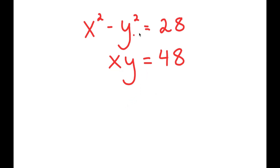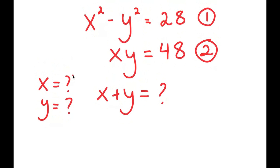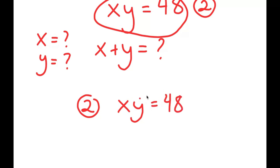Alright, so in this system of equations, I have x squared minus y squared is equal to 28, and x times y equals 48. So I'm given two equations — let's say equation 1 and equation 2. What I want to do is find the value of x plus y. To start, I'm going to use equation 2: x times y equals 48, and I'm going to solve for one variable in relation to the other.